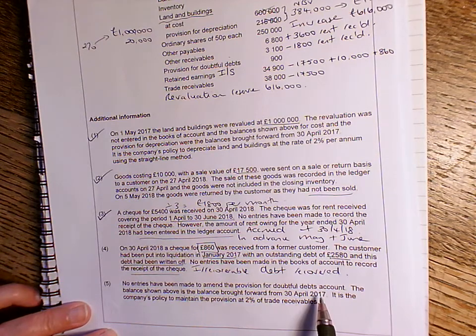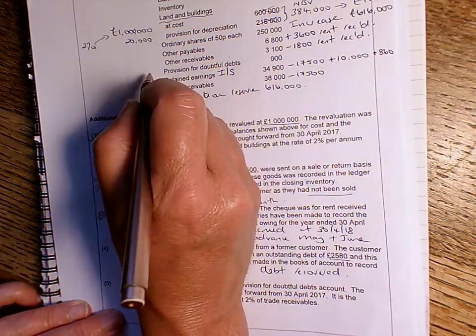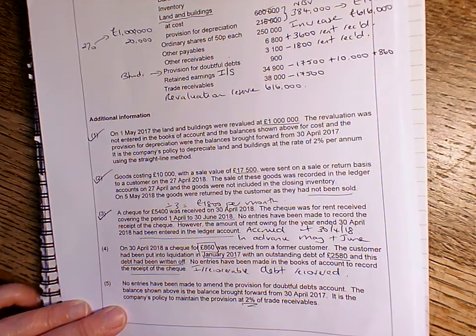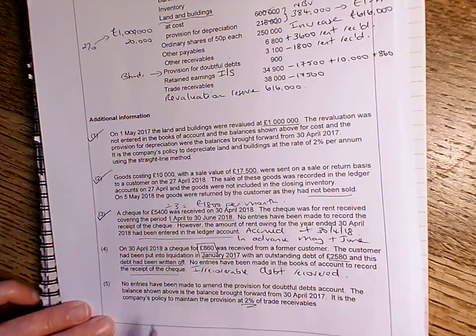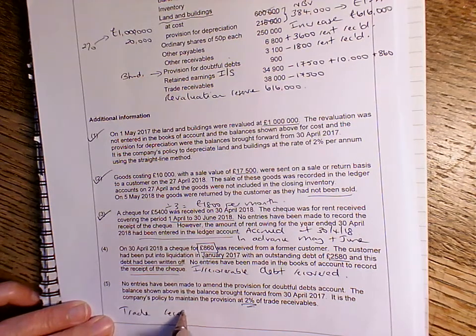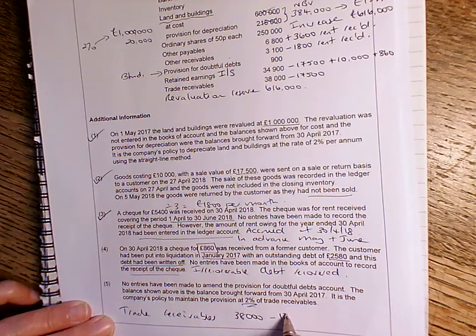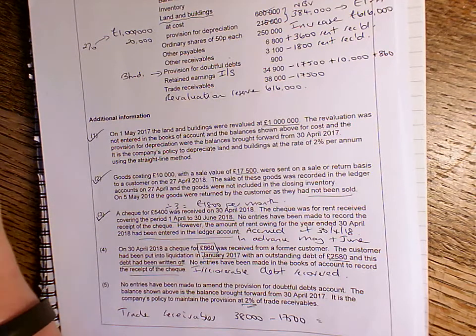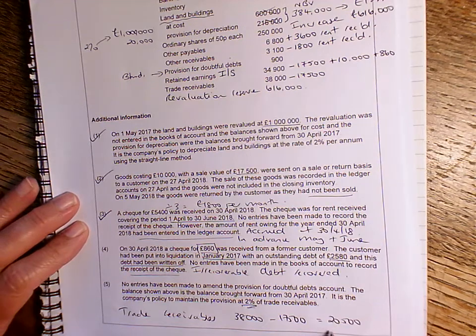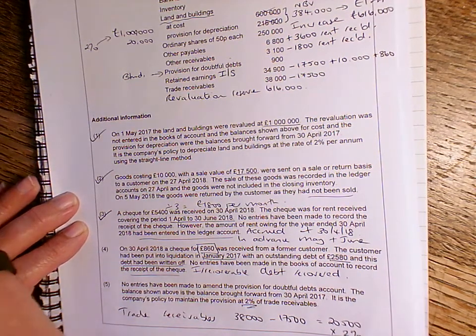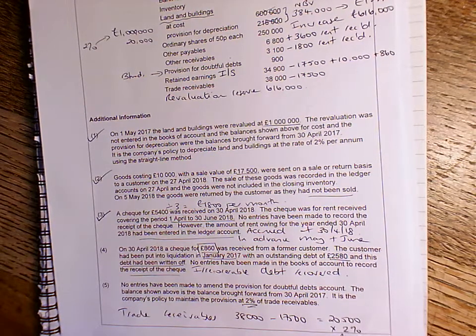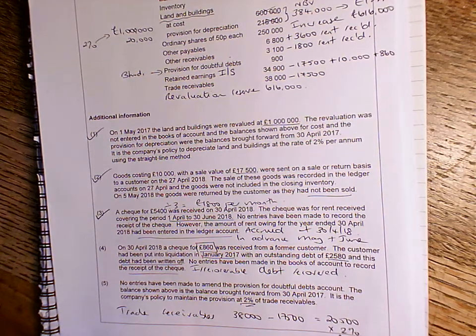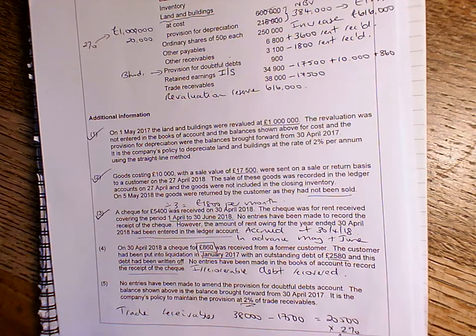No entries have been made to amend the provision for doubtful debts account. So remember, with doubtful debts, we have to look and see what's brought forward. So we've got £900 brought forward. It's the company's policy to maintain the provision at 2% of trade receivables. So our trade receivables are actually £38,000 minus £17,500. Let's do that on my calculator just to make sure I get this right. Minus £17,500 is £20,500. If we times that by 2%, it means that the provision we need is only £410. Now we've got brought forward £900. So therefore, we need to reduce it by the difference, £490.